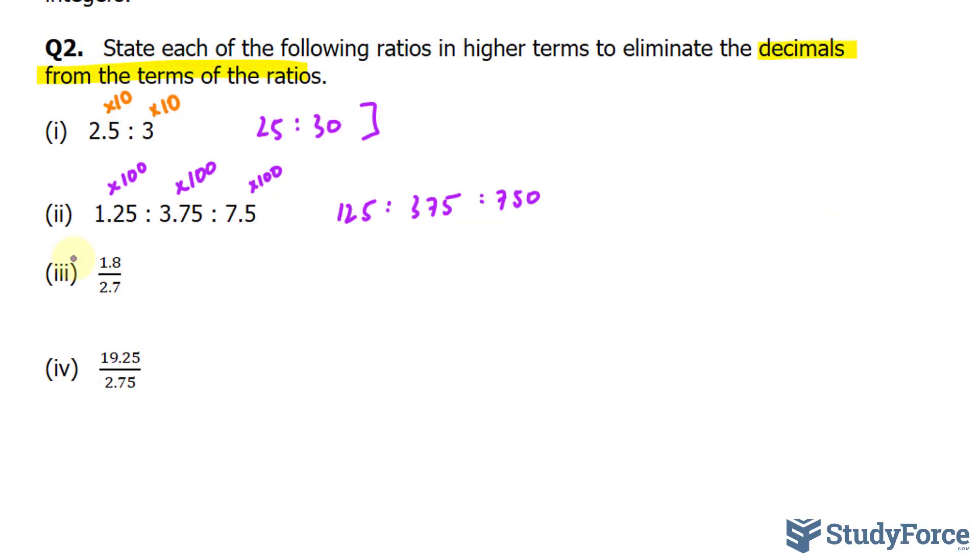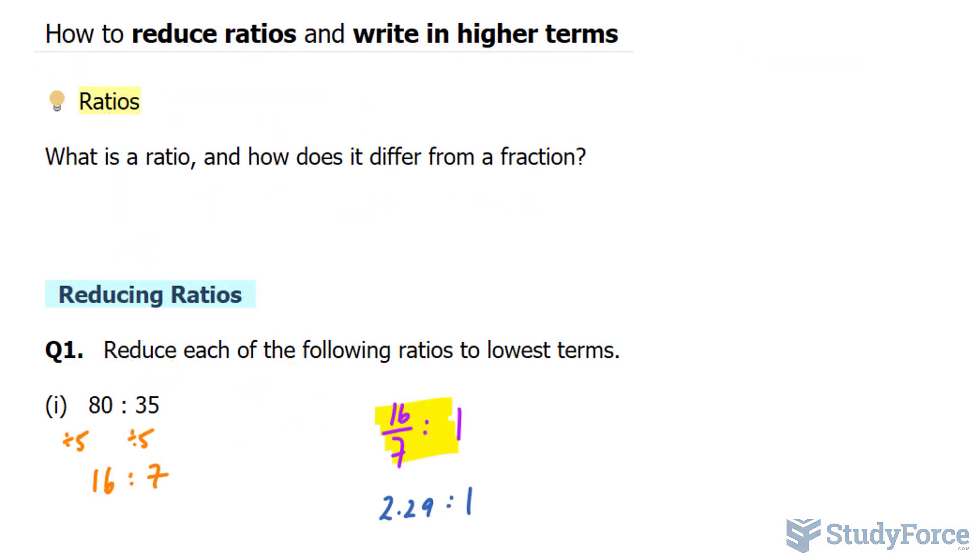Over here, this ratio is written as a fraction, and that's fine. If your ratio has two terms, then you can write it as a fraction. So I'll multiply the top and the bottom by 10 because there's only one digit after the decimal, giving us 18 over 27. And over here, we multiply the top and the bottom by 100, leaving us with 19.25 over 275. And there you have it. That is how to reduce ratios and write ratios in higher terms.